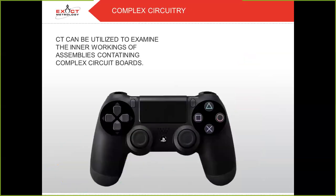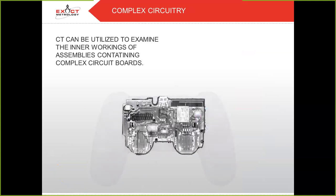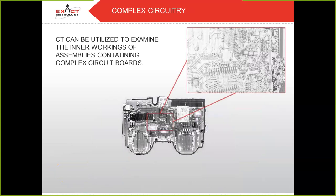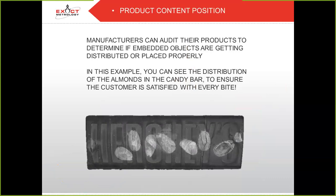CT can be utilized to examine the inner workings of assemblies containing complex circuit boards. And in product content positioning, manufacturers can audit their products to determine if embedded objects are getting distributed or placed properly. In this example, you can see the distribution of almonds in a candy bar to ensure that the customer is satisfied with every bite.